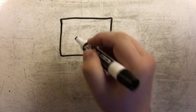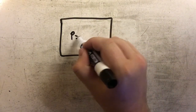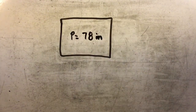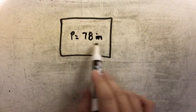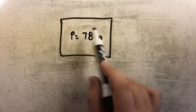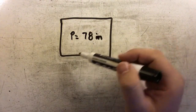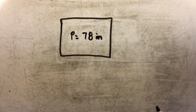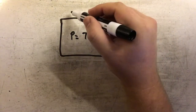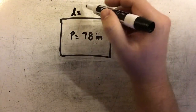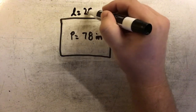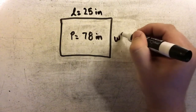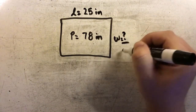In this example we have a rectangle and we're going to say that the perimeter of this rectangle is equal to 78 inches all the way around. We also know what the length of this rectangle is — in this case the length is 25 inches. What we're going to try and find out is what the width is equal to.